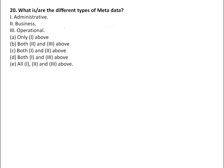What are the types of metadata? Metadata are of three types: administrative, business, and operational. So the answer is all of the above.